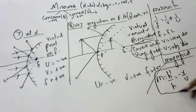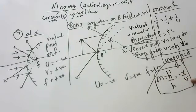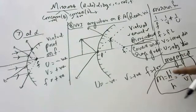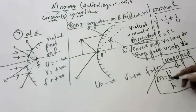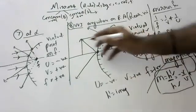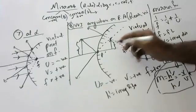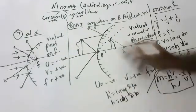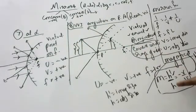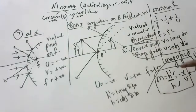Magnification m = h'/h, or m = −v/u. The definition of magnification is the ratio of image size to object size. So magnification is the ratio of image height (h') to object height (h), or equivalently the ratio of image distance to object distance.